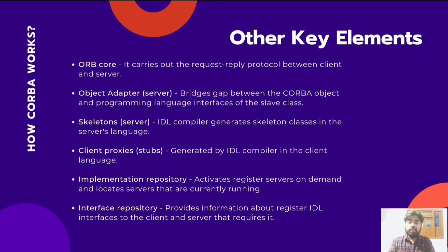Now let's understand the other elements of CORBA. The first is the ORB core, which carries out the request-reply protocol between client and server and provides operations that enable processes to be started and stopped. The next is the Object Adapter, installed at the server side, which bridges the gap between the CORBA object and the programming language interface of the slave class. Next is the Skeleton, which also resides at the server side — the IDL compiler generates the skeleton class in the server's language.